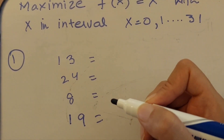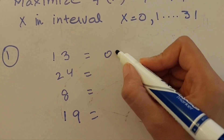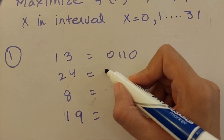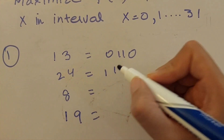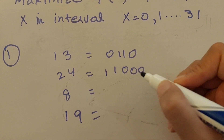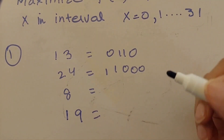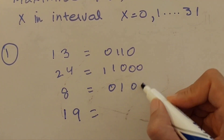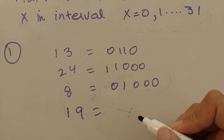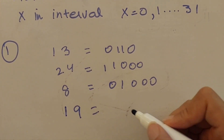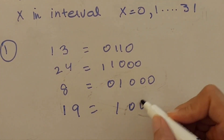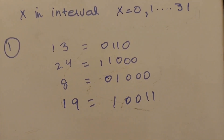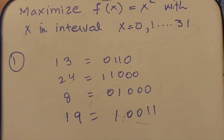The binary number for 13 is 01101, for 24 is 11000, for 8 is 01000, and for 19 is 10011. These are the binary conversions — you can verify them with a calculator.